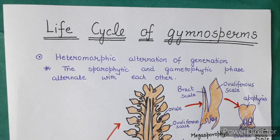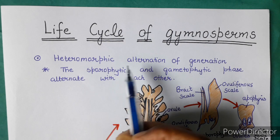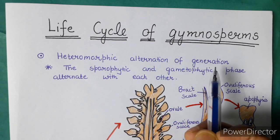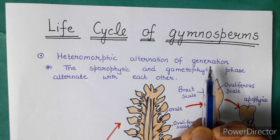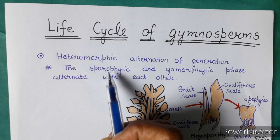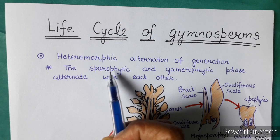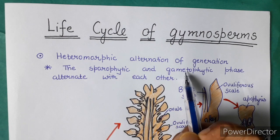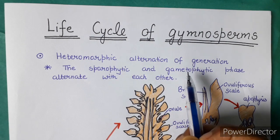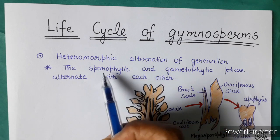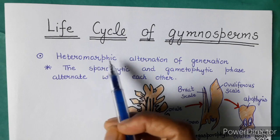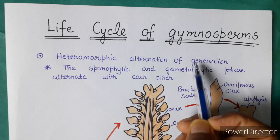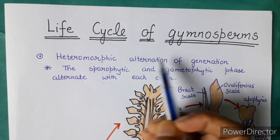Gymnosperms show heteromorphic alternation of generation. This means there are two phases in the life cycle: one is the sporophytic phase, which is diploid, and the other is the gametophytic phase, which is haploid. Both phases are visible in the life cycle, one phase alternating after the other in a cyclic manner.